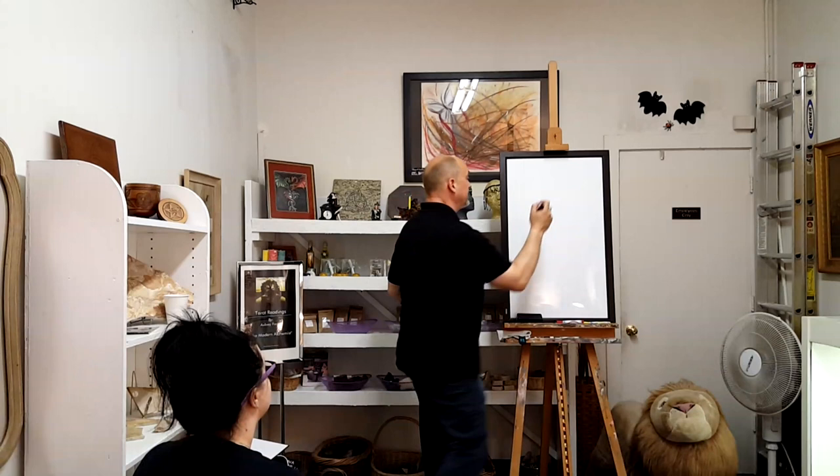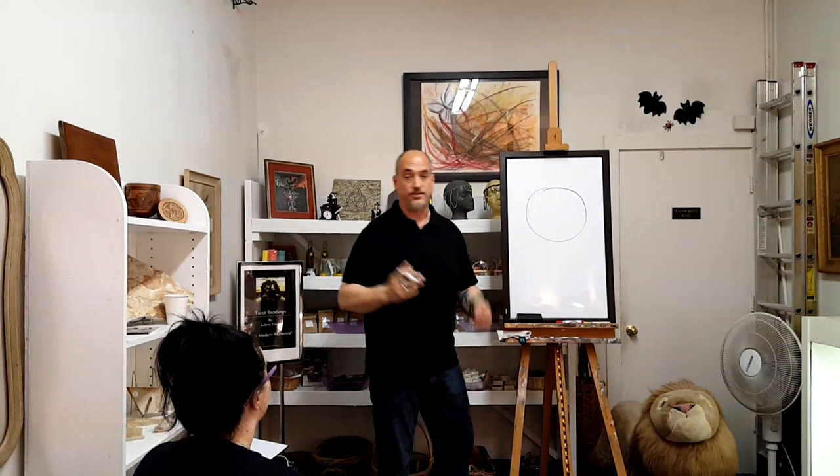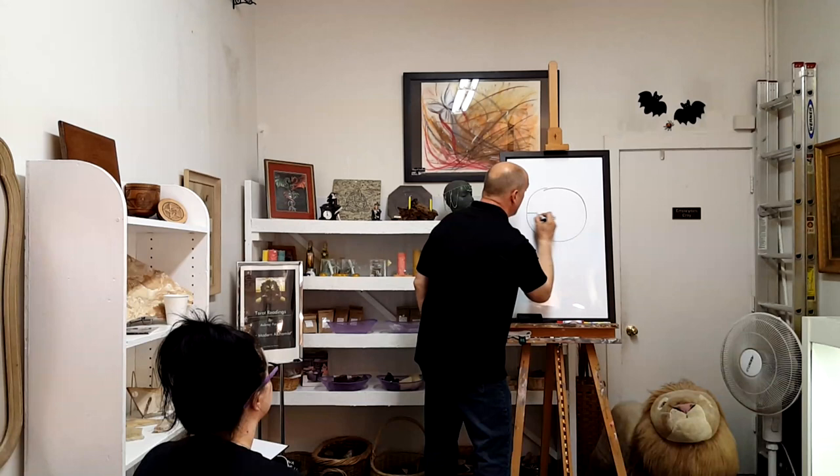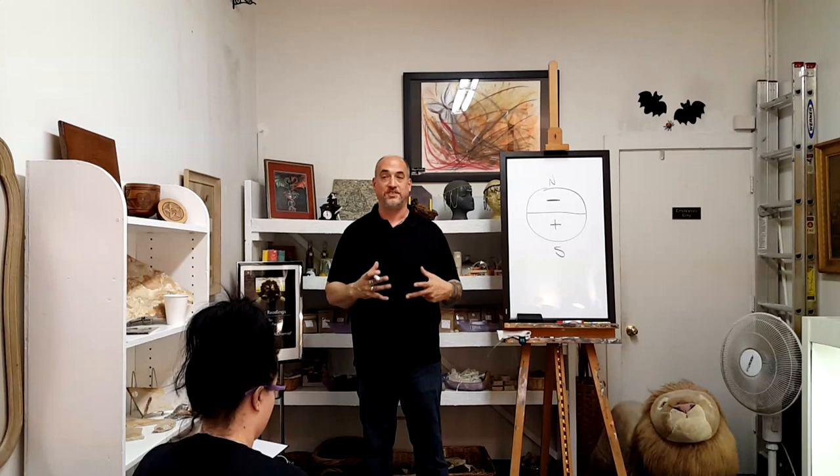The flow of energy through any body — including you — is top to bottom. At the top it's negative receptive, and at the bottom it's positive projective. So this is your North Pole and this is your South Pole.